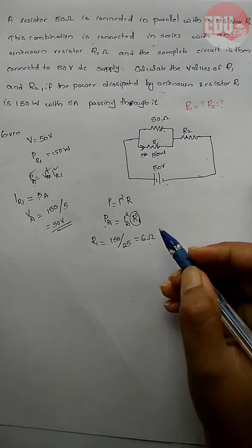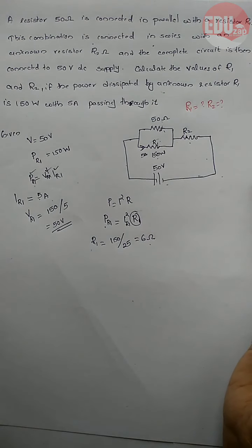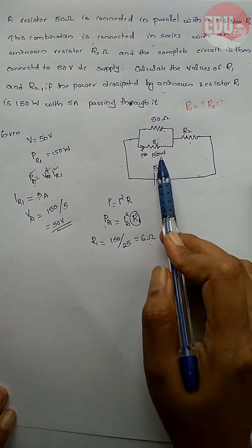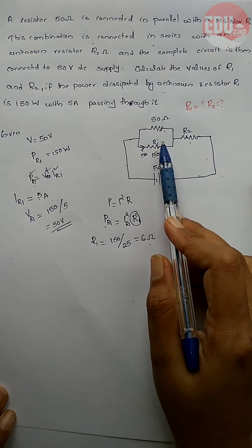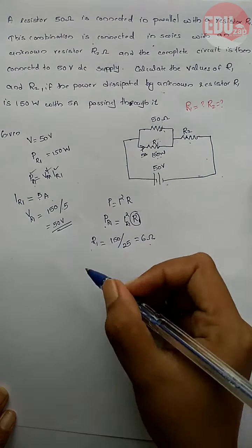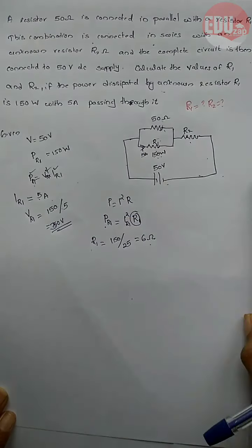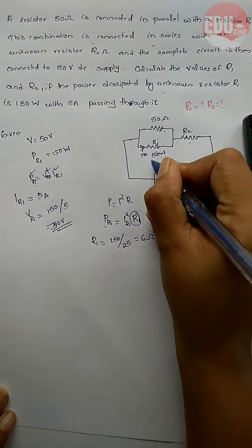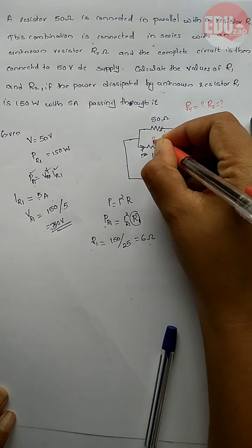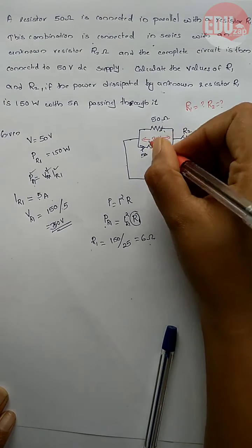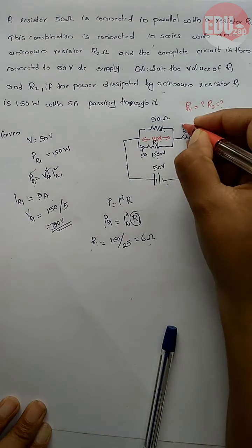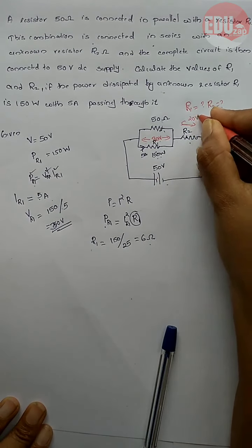Now we need to find R2. The voltage across R1 is 30 volt. The total supply is 50 volt, so the voltage across R2 is 50 minus 30, which gives us 20 volt.